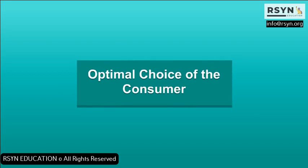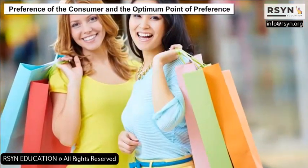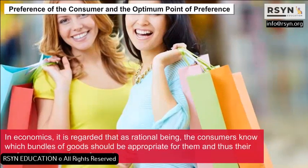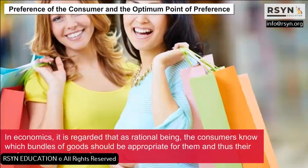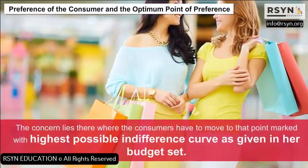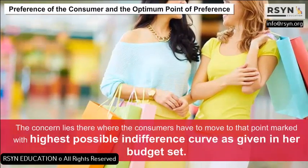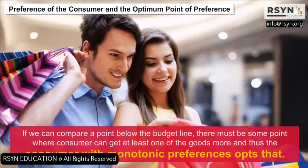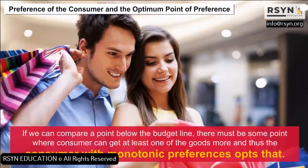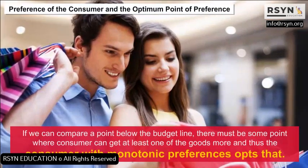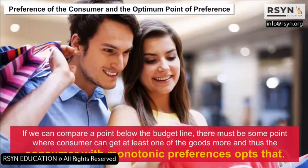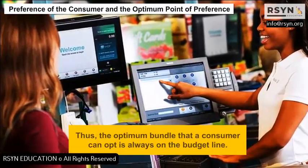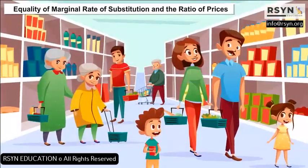Optimal Choice of the Consumer: In economics, rational consumers know which bundles of goods are appropriate for them. The consumer must reach the highest possible indifference curve within the given budget set. If we compare a point below the budget line, there is always some point where the consumer can get more of at least one good. Thus, the optimum bundle that a consumer can opt is always on the budget line.